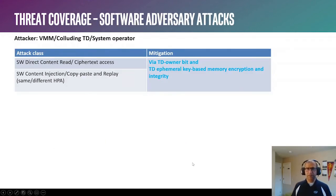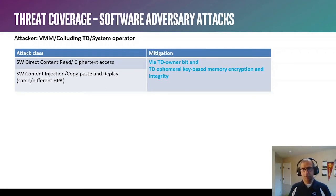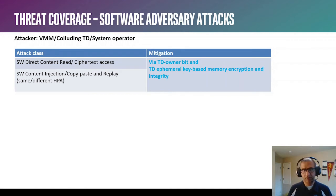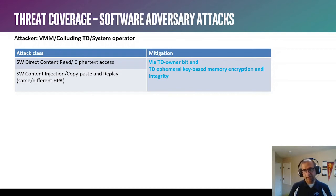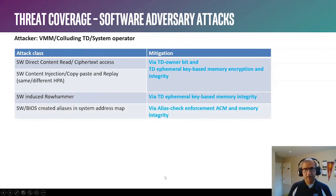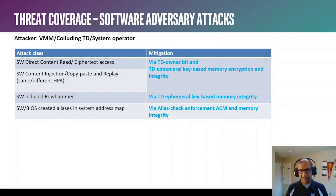Now let's look at threat coverage. For software adversary attacks, the attacker set includes any CSP software such as the VMM, colluding TDs on the platform, and the system operator. The first attack class is software attempting direct access to TD private memory — reading contents, accessing ciphertext, or injecting content. This is mitigated through the TD owner bit access control properties combined with ephemeral key-based memory encryption and integrity. Secondary attack vectors include row hammer and system address map aliases created by malicious BIOS, addressed through memory integrity mechanisms and alias check enforcement via authenticated code modules from Intel.